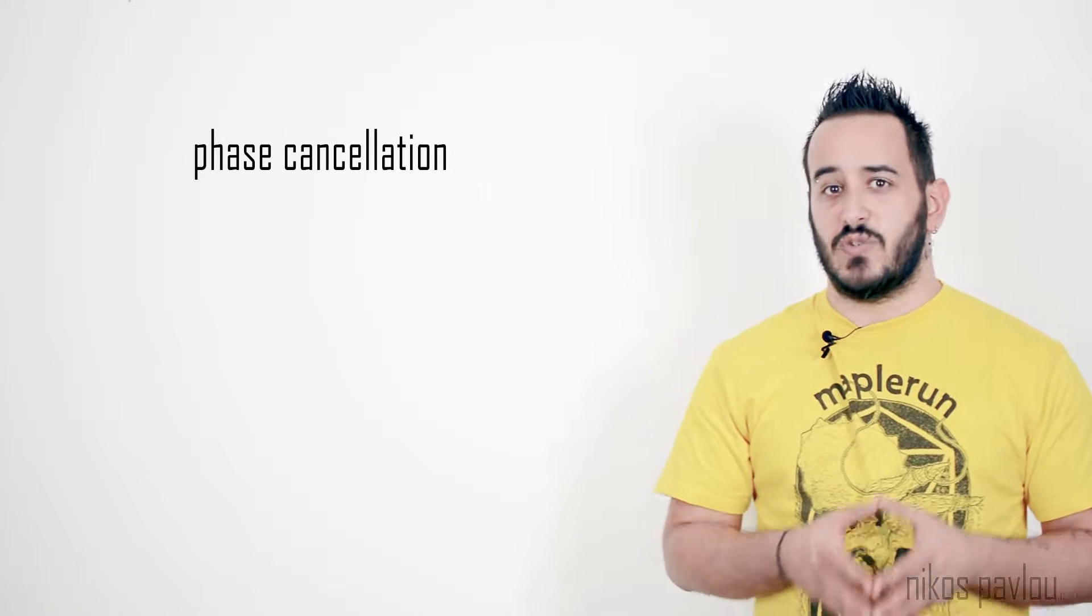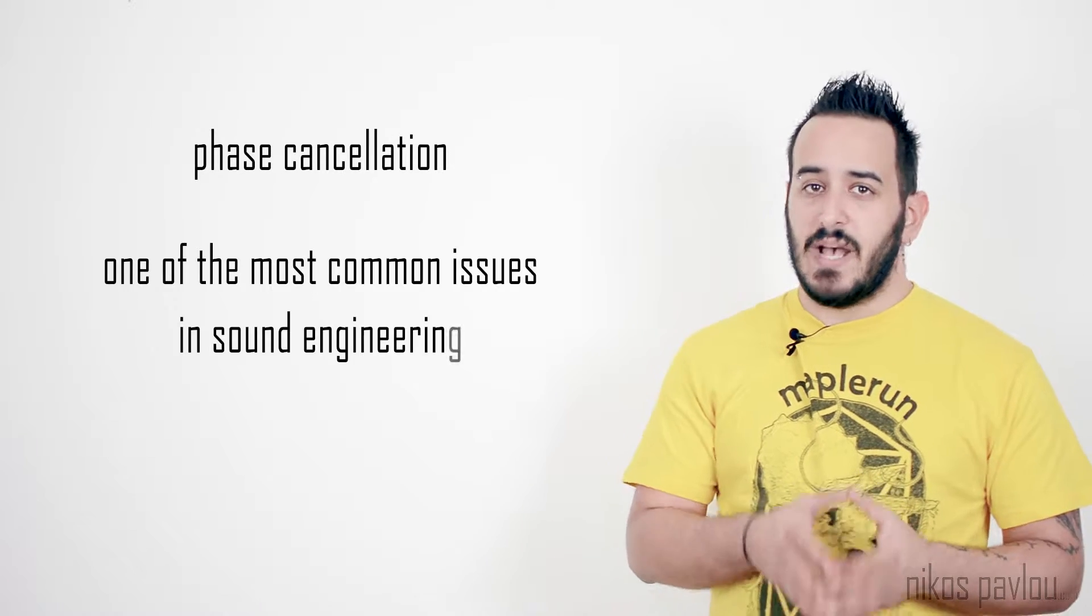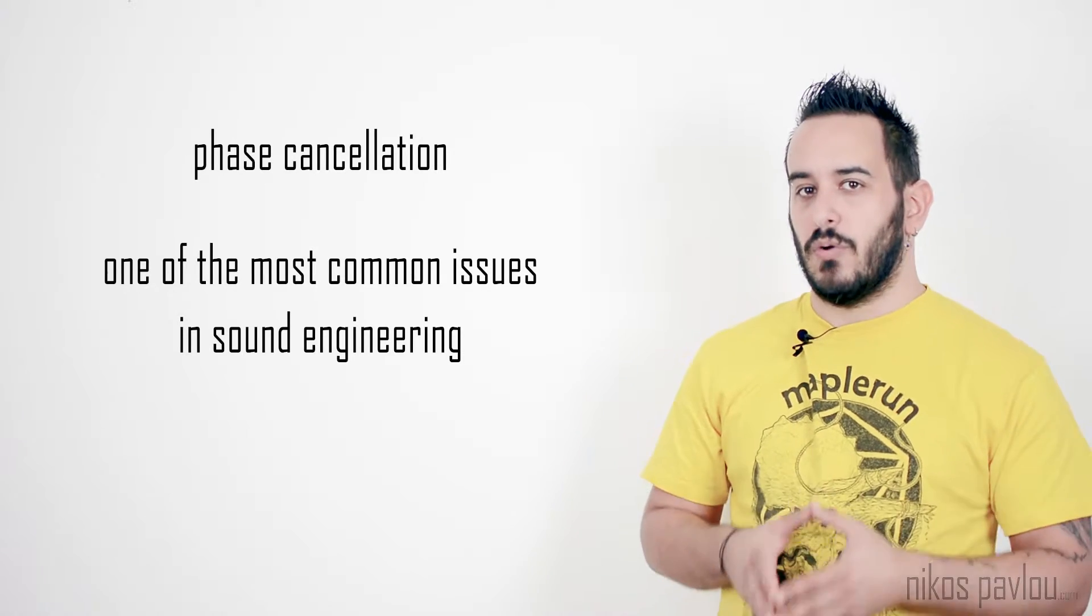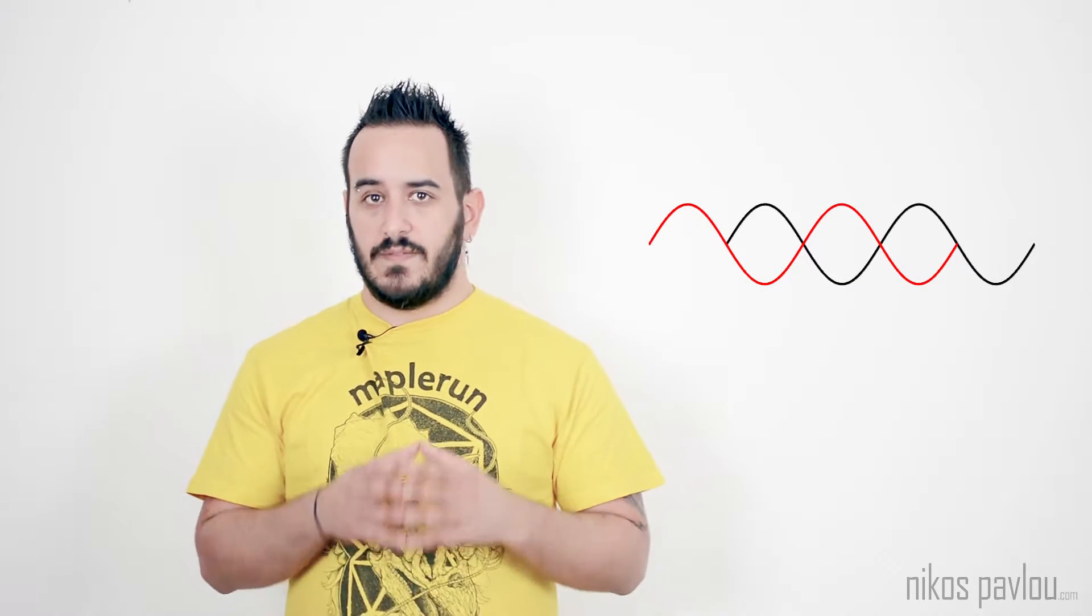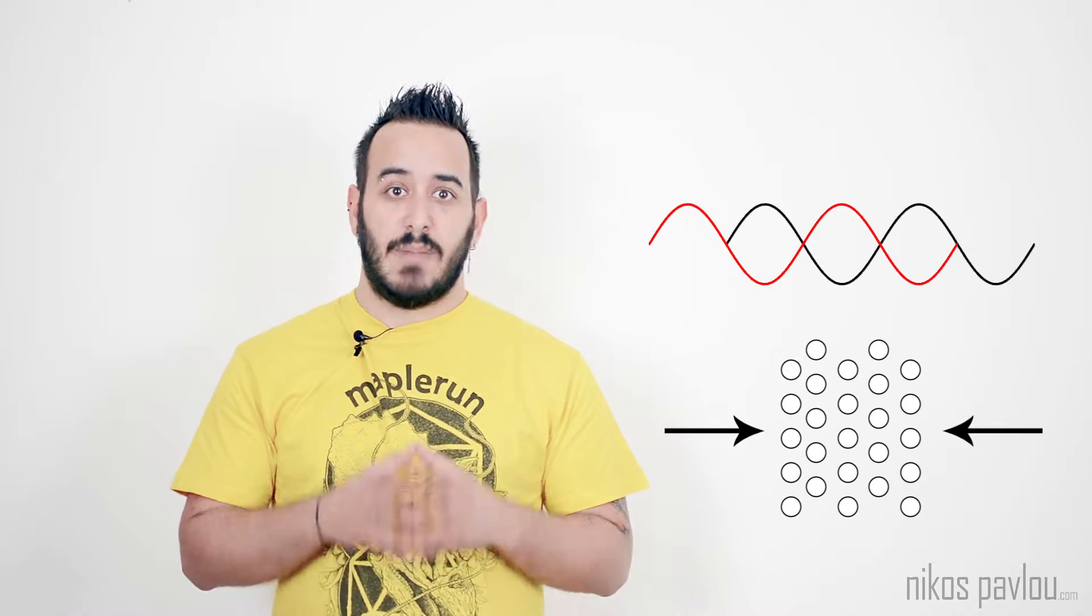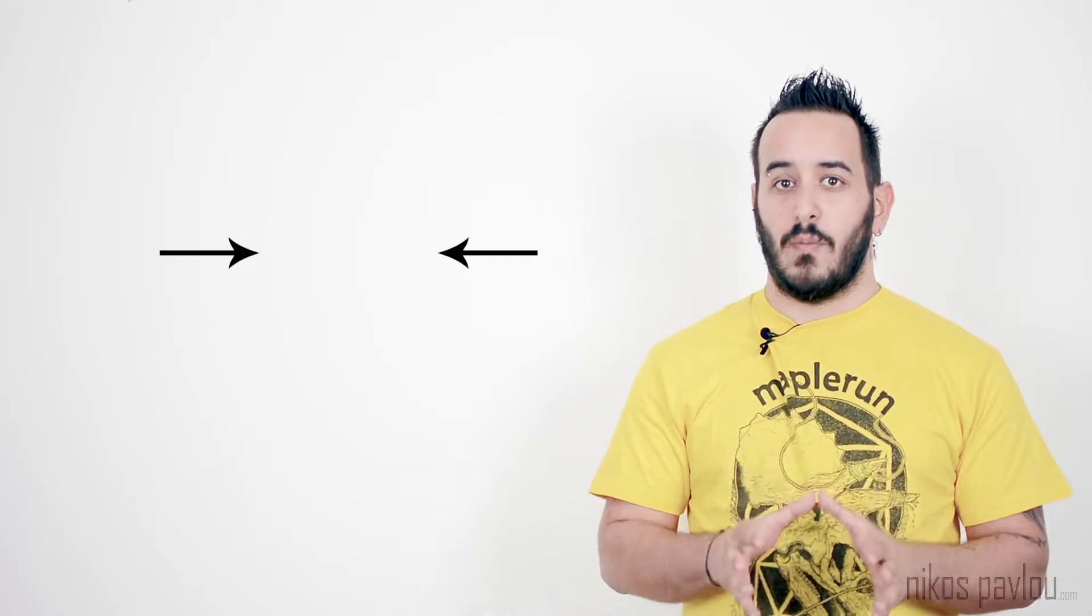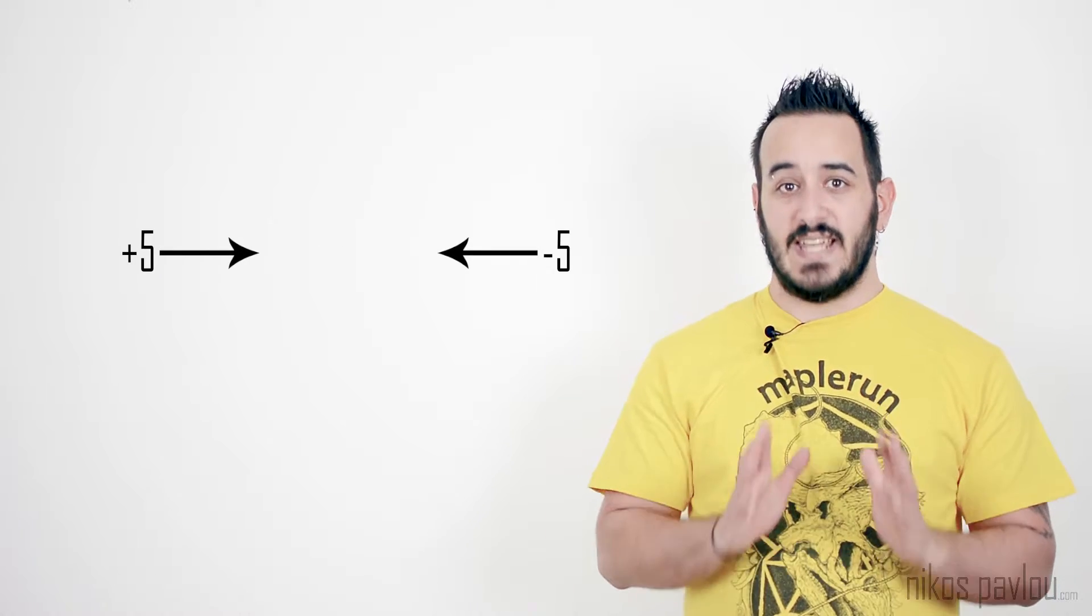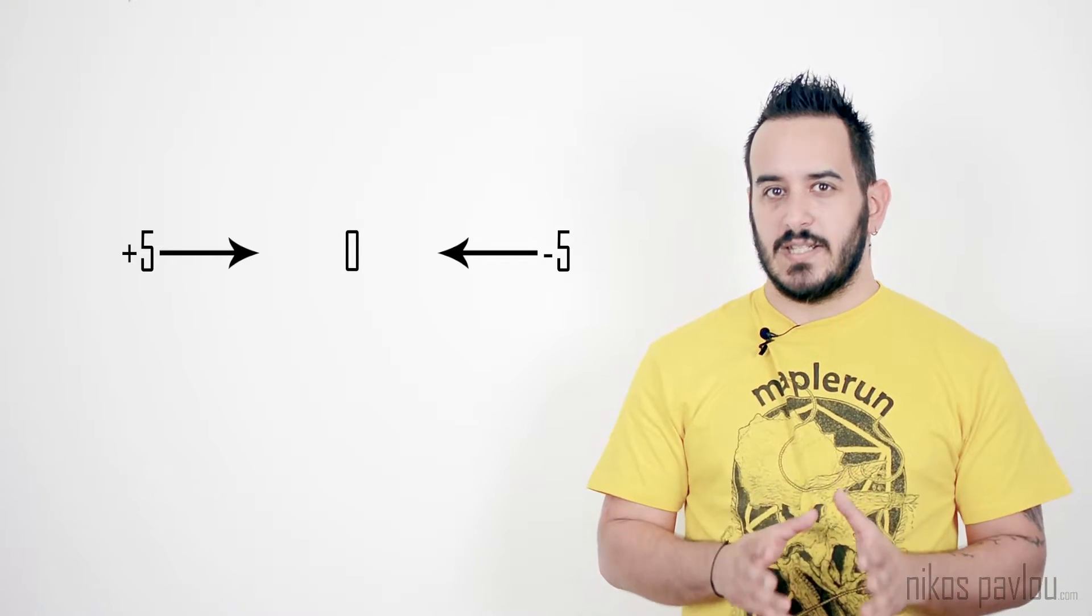Phase cancellation on the other hand is quite the opposite and it might be actually one of the most common issues you will come across in sound engineering. If one of the two sound waves arrives late by half a period, then its compressions will match the rarefactions of the other sound wave. That will result in the particle being pressured by both sides by the same amount of pressure. Since we are talking about pressure, if you apply the same amount of pressure to an object from both sides, then the object will stay still, in our case, the air particles.